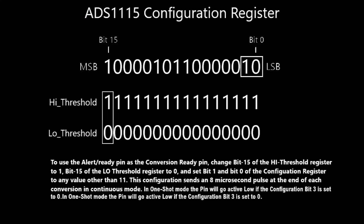The alert ready pin can be used as a conversion ready pin by setting the high threshold most significant bit to 1, the most significant bit of the low threshold to 0, and setting configuration register bits 1 and 0 to any value other than 1-1. In this mode, the alert ready pin will set an 8 microsecond pulse at the end of each conversion in continuous mode. In one-shot mode, the pin will go active low if configuration bit 3 is set to 0.